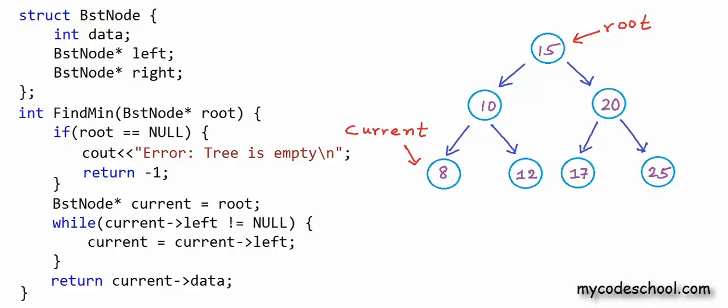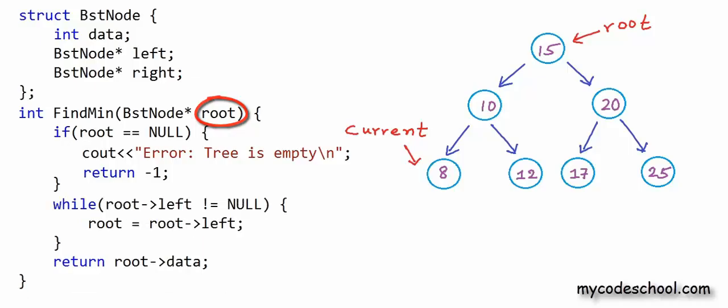One more thing, we do not need to use this extra pointer to BstNode named current. Root here is a local variable and we can use this root itself. So we can write our code like this. While left of root is not equal to null, we can go left with this statement: root equal root arrow left, and finally we can return root arrow data, which is only an alternate syntax for asterisk root dot data. Modifying this local root is not going to modify my root in main function or whatever function I am calling this findMin function from. So this is our iterative solution to find minimum element in BST.